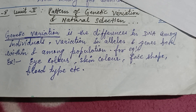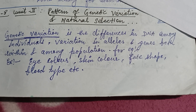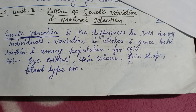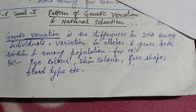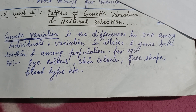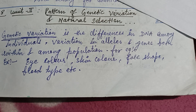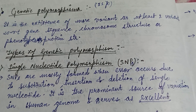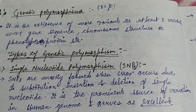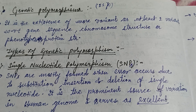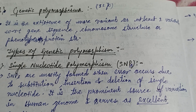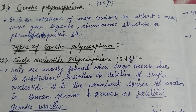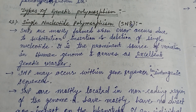Hello everyone. This video is about genetic polymorphism. Genetic variation refers to differences in the DNA sequence among individuals — such as eye color, skin color, face shape, and blood type. Genetic polymorphism is the variation or existence of more than one form, and it is of three types.